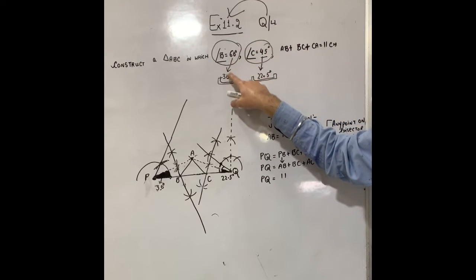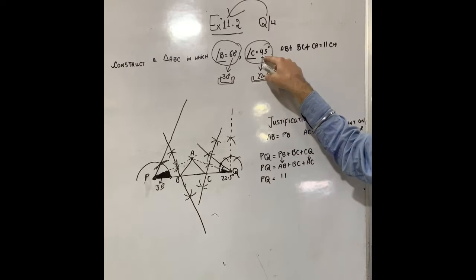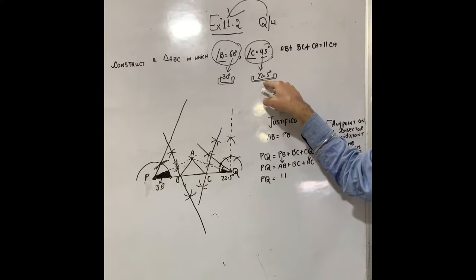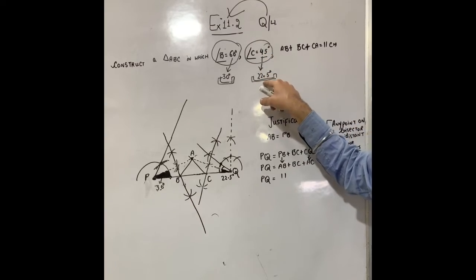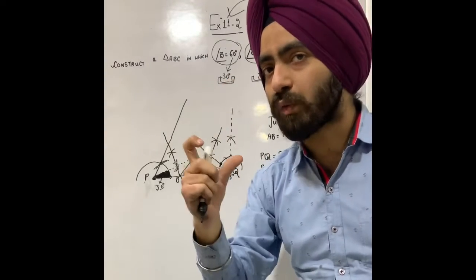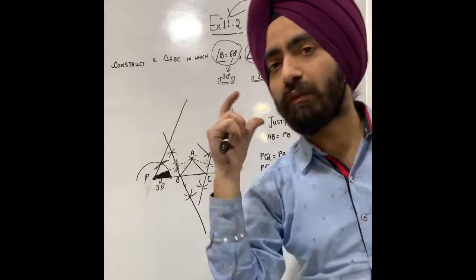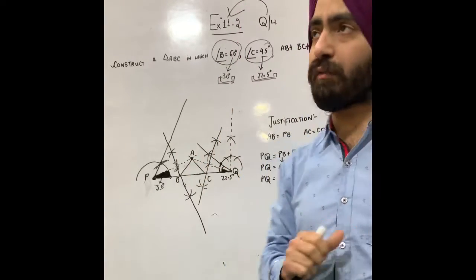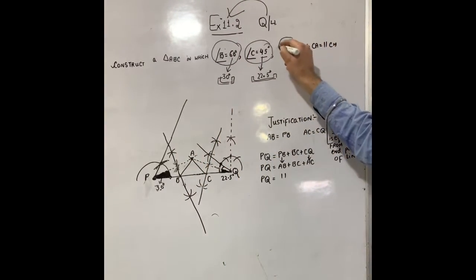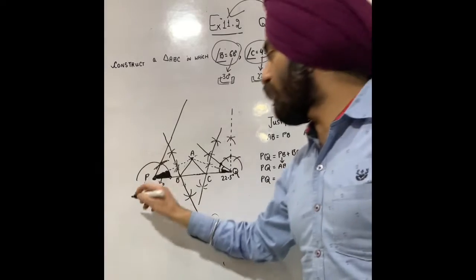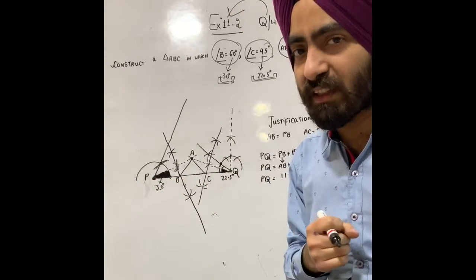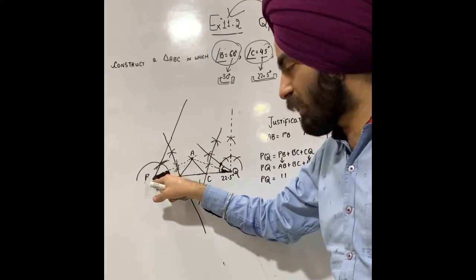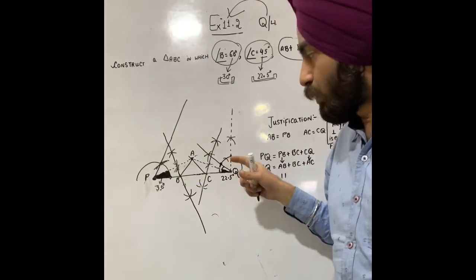To construct 60 degree and 45 degree angles, we actually need to make 30 degrees and 22.5 degrees. 60 divided by 2 is 30, and 45 divided by 2 is 22.5. So we have to make a perimeter of 11 centimeters. We need to draw line PQ of 11 centimeters, with endpoints P and Q.